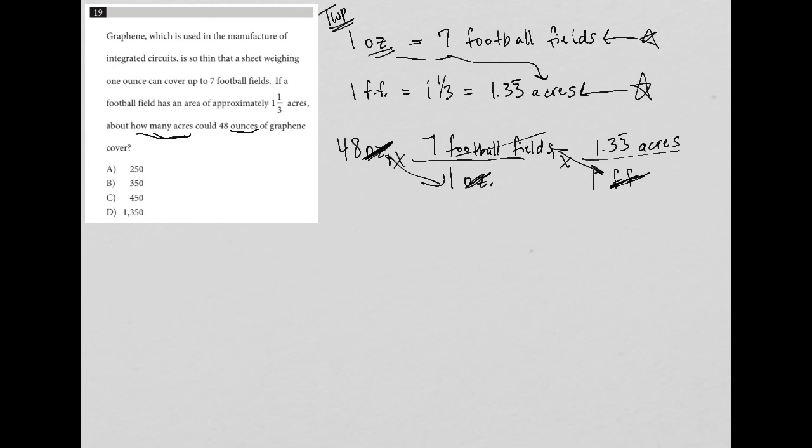So now I'll just go straight to my calculator, and I just multiply the values that I have here. So I have 48 times 7 times 1.33 is equal to 446.88 acres. It does say about how many, so not exactly. So this answer must be 450.